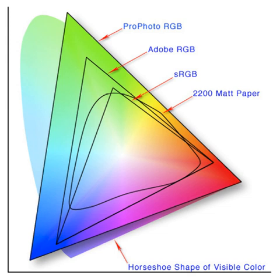The RGB color model is implemented in different ways, depending on the capabilities of the system used. By far the most common general-use incarnation as of 2006 is the 24-bit implementation, with 8 bits, or 256 discrete levels of color per channel.